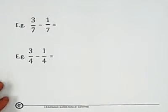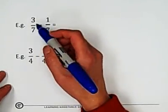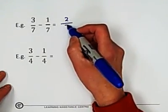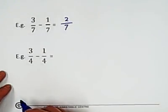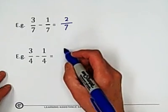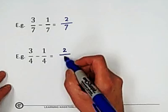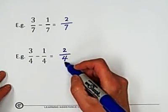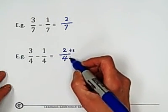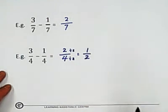For subtraction, follow the same rule, just subtract the numerator. Keep denominator unchanged. For example, subtract the numerator and keep denominator unchanged. The answer can still be simplified. Divide by the common factor to get the simplified answer.